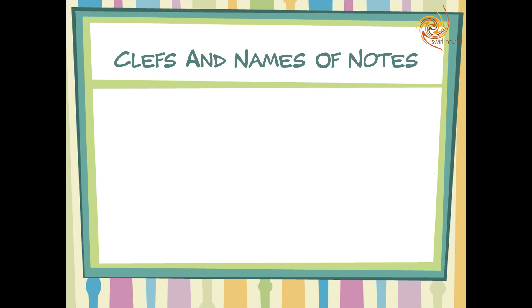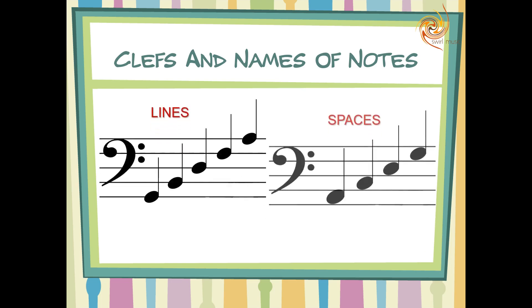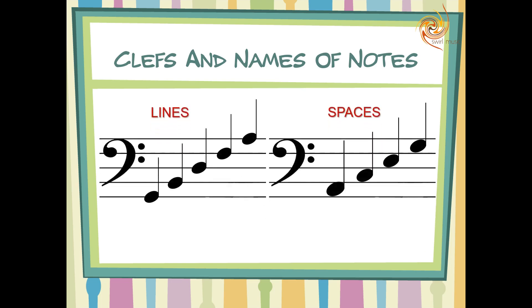To help you remember these names, just like the treble clef, we split it into lines and spaces. To remember the notes of the lines, you can use the phrase "Good Boys Deal For Aces," and the spaces: "All Cows Eat Grass."